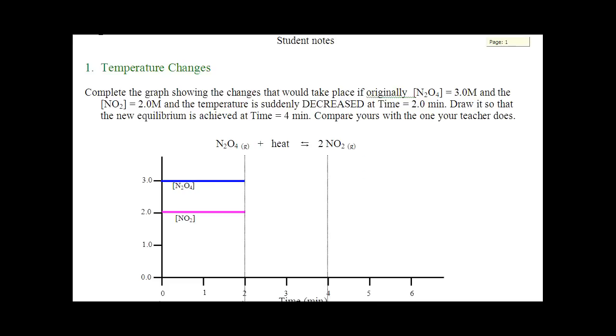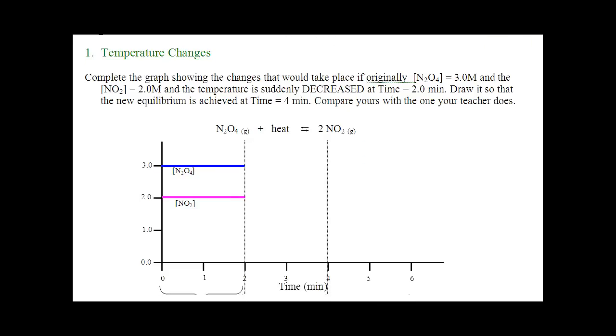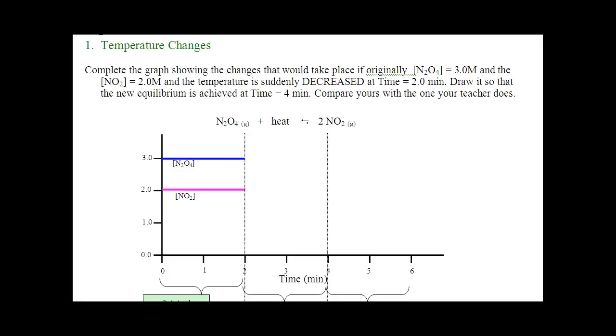So to start things off, we're going to deal with temperature and graph a temperature change. In this example, we are going to decrease the temperature. When you decrease the temperature, you remove heat. When you remove heat, the system is going to undo that change by making more, so it's going to shift to the left.